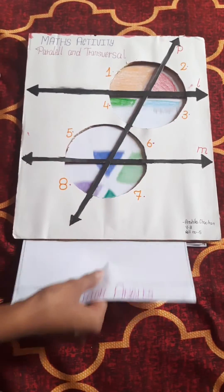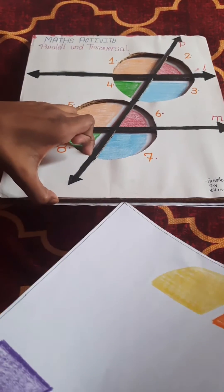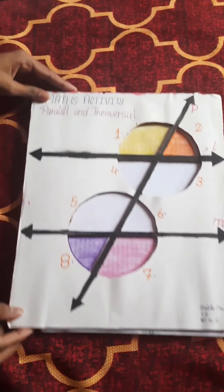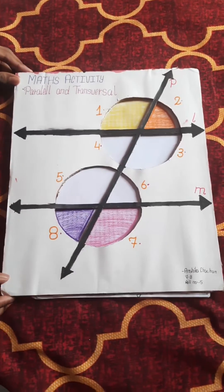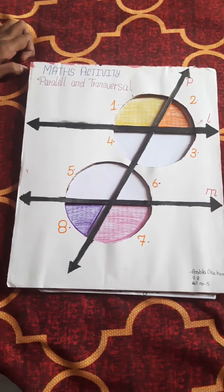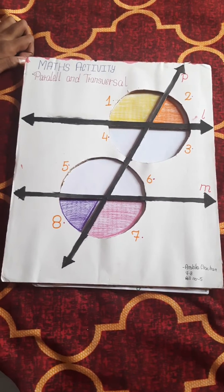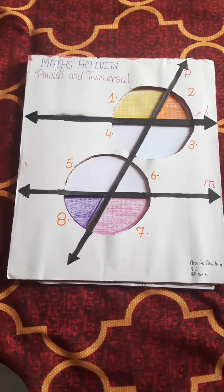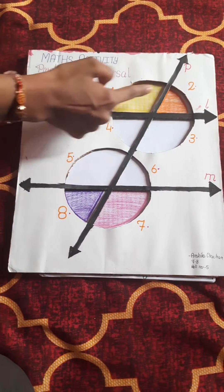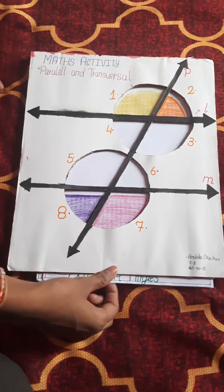Next, we will learn about exterior angles. Exterior angles are the angles between the side of a rectilinear figure and the adjacent side extended outward. For example, angles 1 and 2, and angles 8 and 7 are exterior angles.